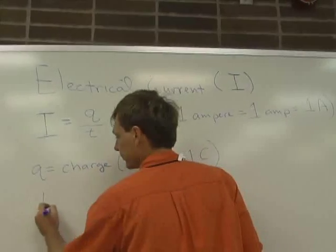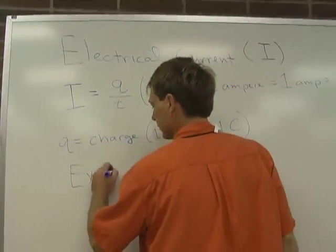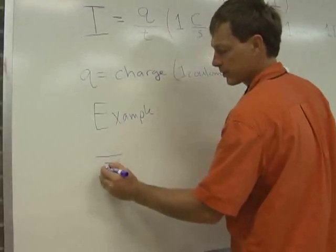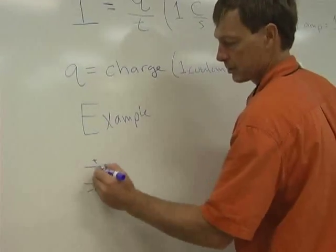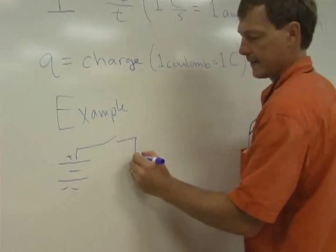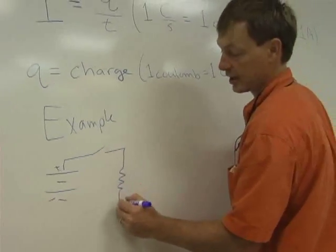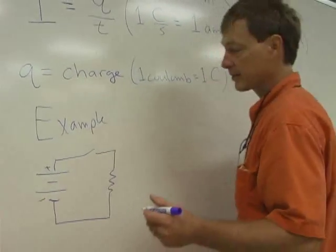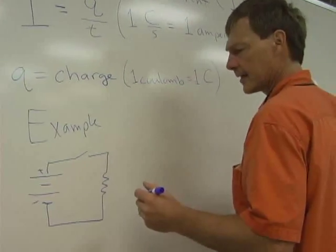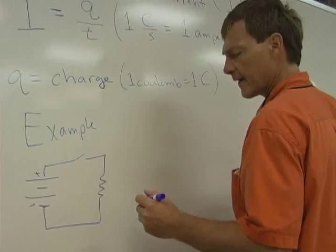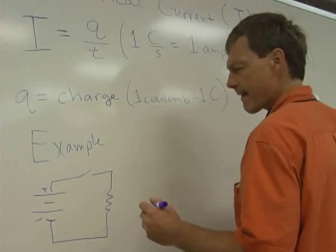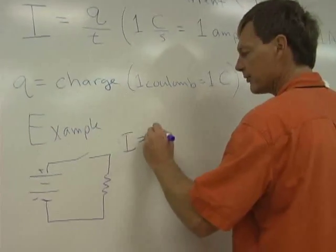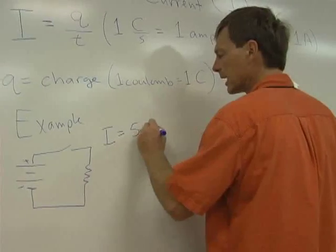So let's do an example. I've got a circuit. And I'll put a resistor in there. We'll talk about resistors more later. Got to slow the flow down so you don't burn out the wire. And let's say I've got a current of 5 milliamps.